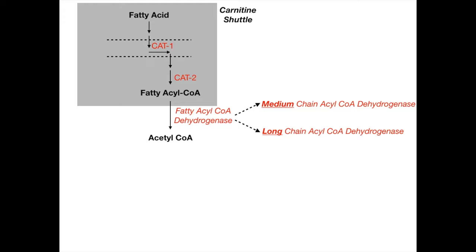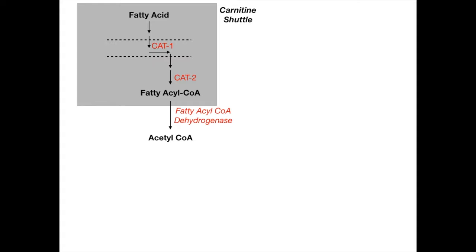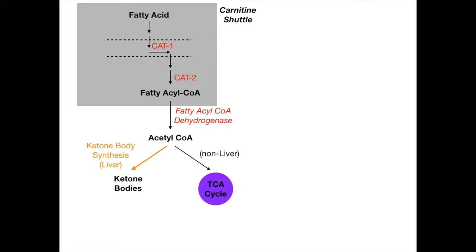Once you have acetyl-CoA, it can be converted into two products. One is ketone bodies in the liver. The other is to enter the TCA cycle — acetyl-CoA is what enters the TCA cycle from pyruvate. The goal of beta-oxidation is to provide fuel: at acetyl-CoA, the two choices are ketone body synthesis in the liver for starvation or brain fuel, or the TCA cycle to generate ATP via the electron transport chain.